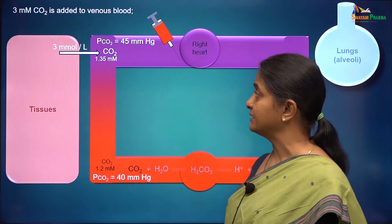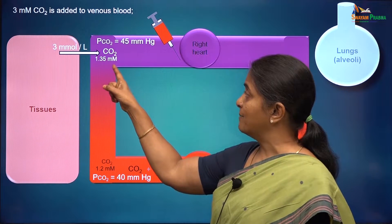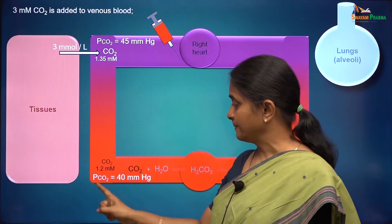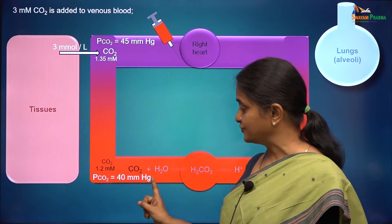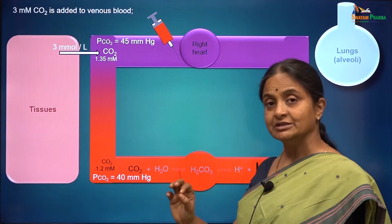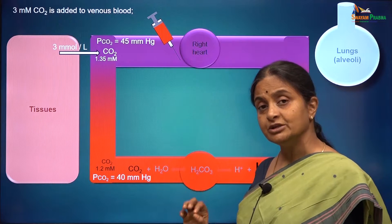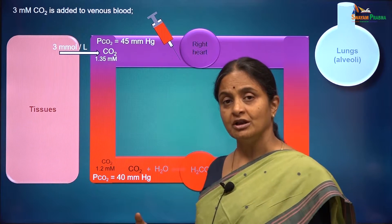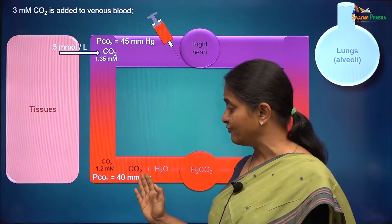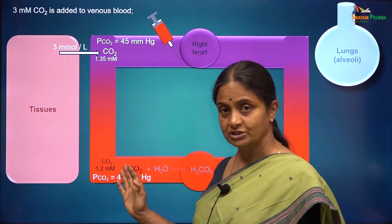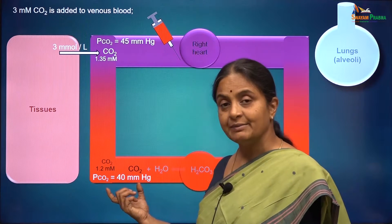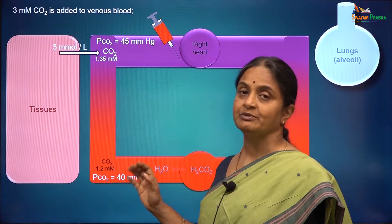Carbon dioxide concentrations are measured as partial pressures. Partial pressure of carbon dioxide in arterial blood is 40 mmHg and in venous blood is 45 mmHg. For every mmHg partial pressure, 0.03 millimoles per litre will be dissolved in liquid. Therefore, for a PCO2 of 40 mmHg, we get 40 × 0.03 = 1.2 millimoles per litre carbon dioxide. If you have seen ABG reports, carbon dioxide concentrations are reported as PCO2.